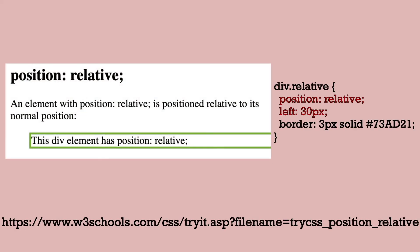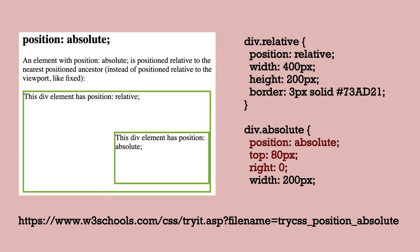Position relative references a certain point from where the element would normally be in normal flow. Position absolute removes the element completely from normal flow and positions it relative either to its parent if the parent has position relative or absolute, or to the viewport of the page itself. It usually goes to the top left of the page and you use offset values to move it where you want.